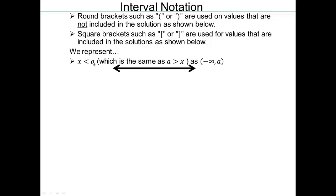We clearly have to plot a first. Is it included or not? It's less than, so we're going to have a hole at a. x is smaller than a, so you have to go this way — the arrow is pointing towards the negative direction. So negative infinity to a: you're going all the way down from a.